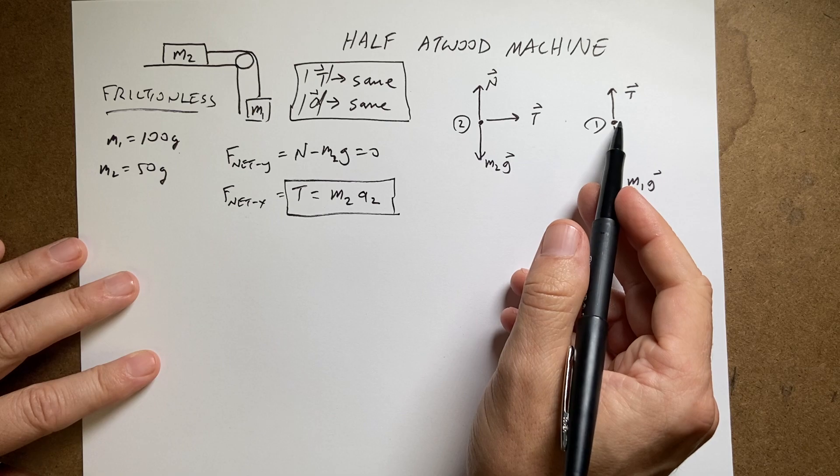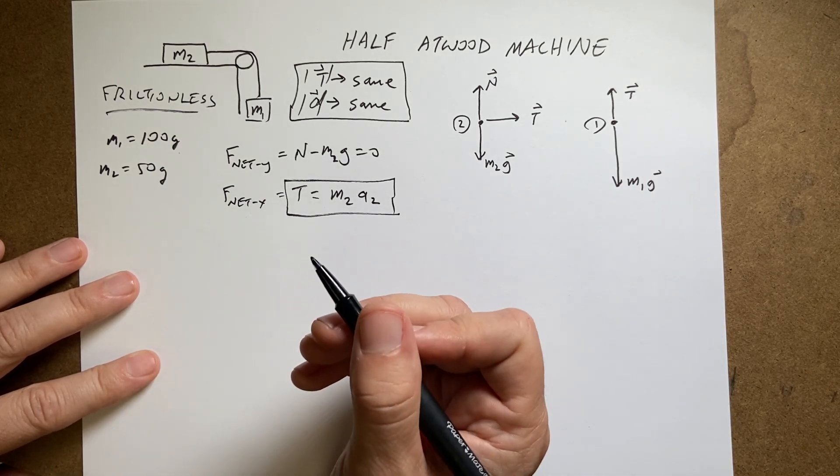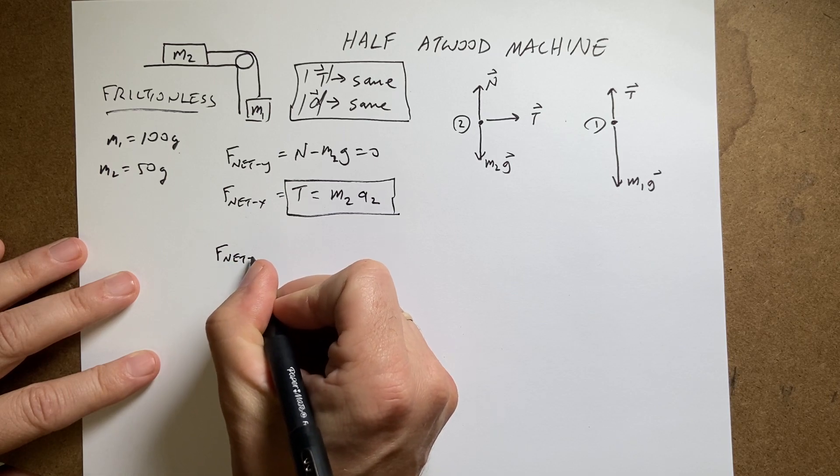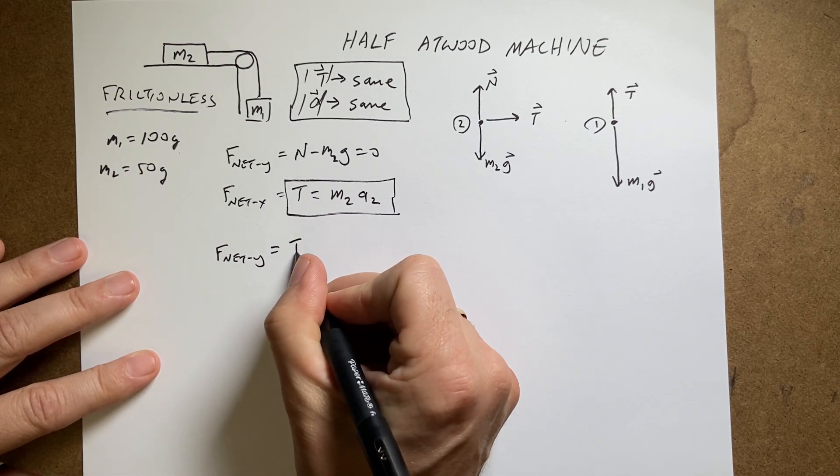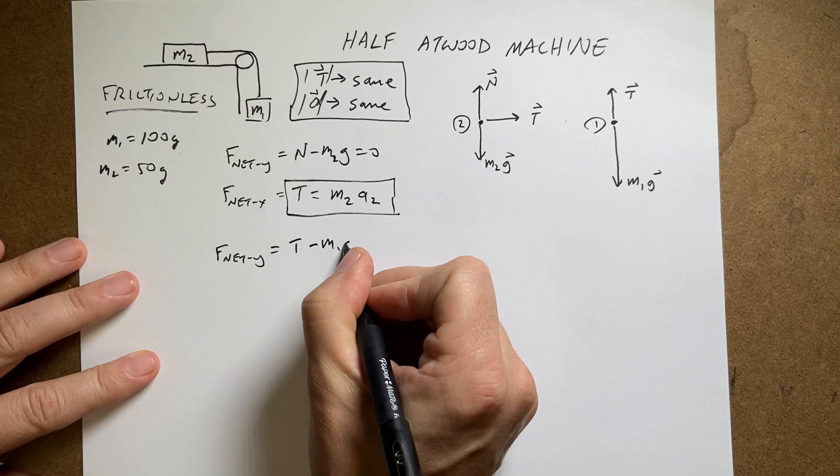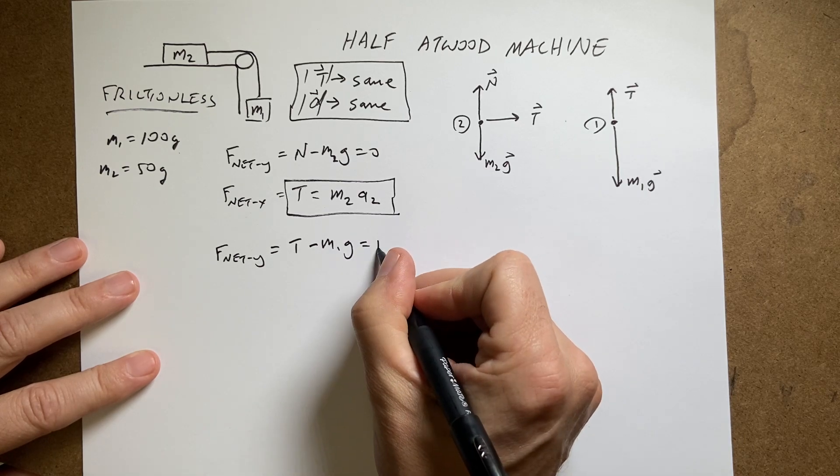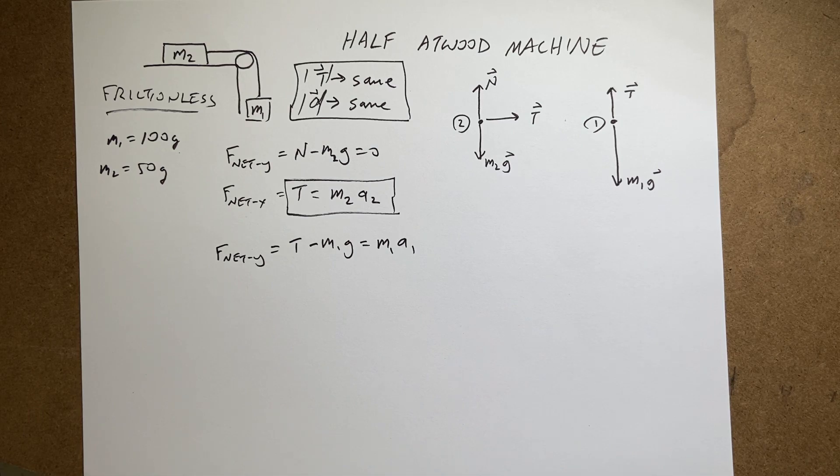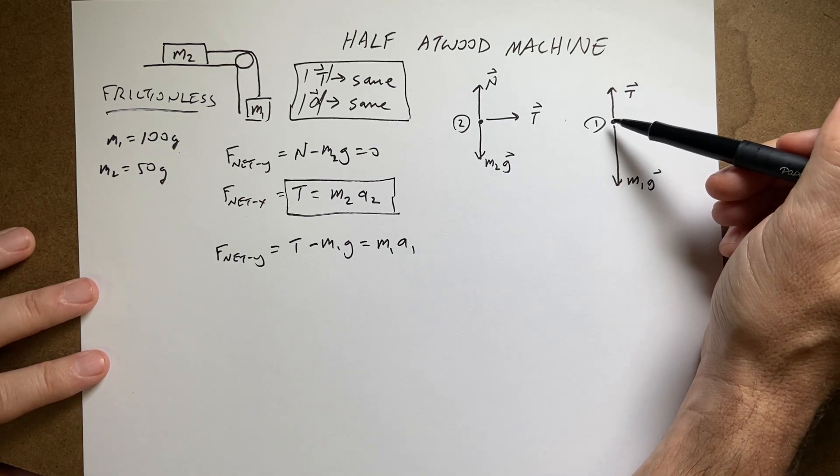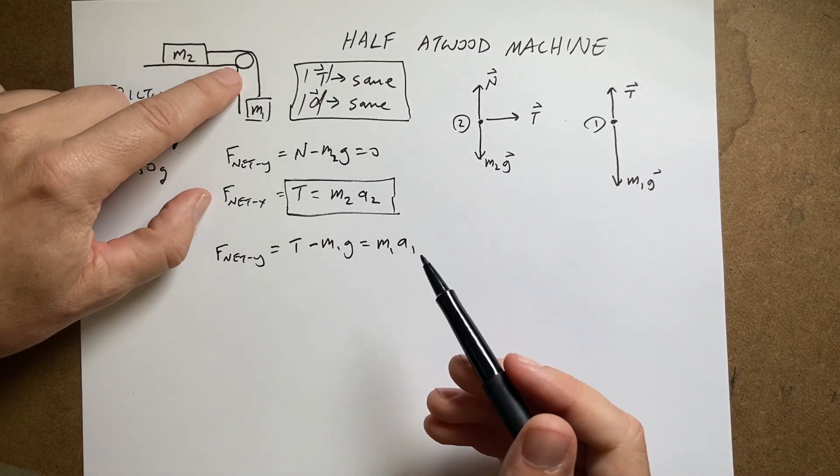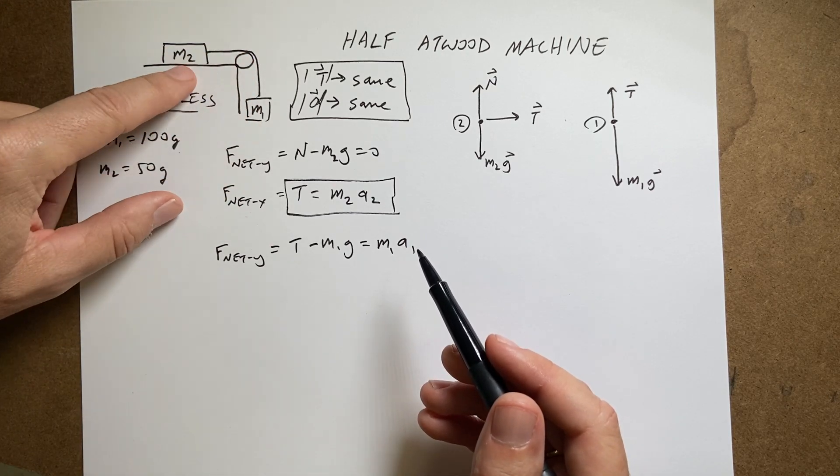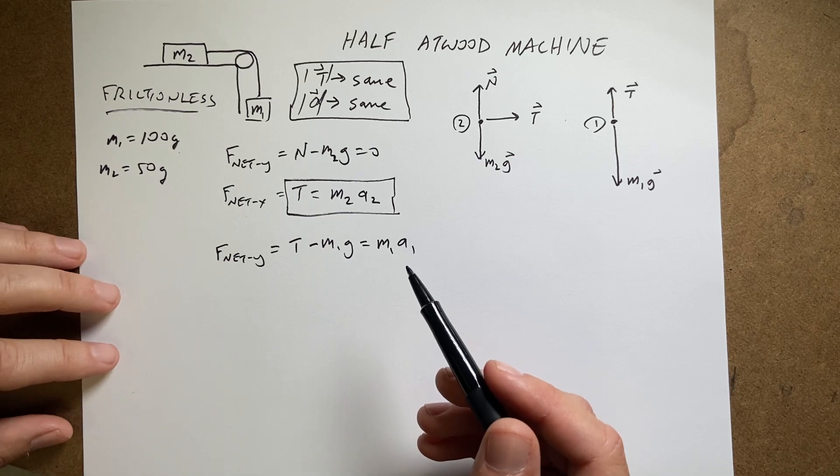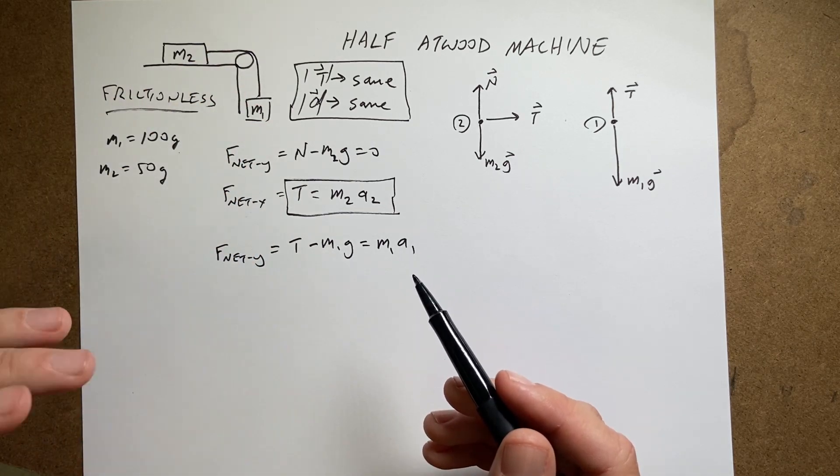Now let's look at mass one. I can write that. There's nothing in the x direction. So I'm going to write that one. F net y is going to be t minus M1g equals M1a1. And a1 should be negative because the gravitational force is going to be negative. You can't imagine this accelerating up. There's nothing that would make it go up. It's going to accelerate down. It could move up. Okay. But it's going to accelerate down.